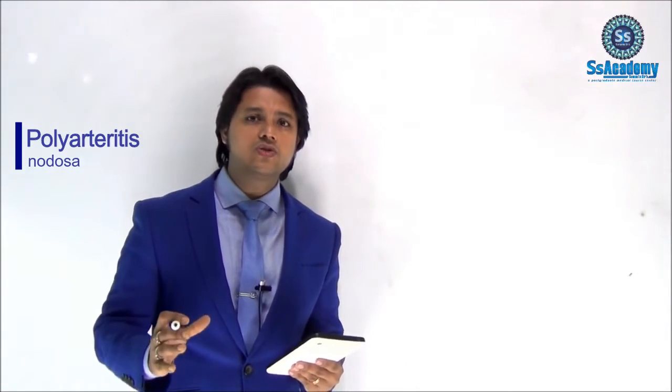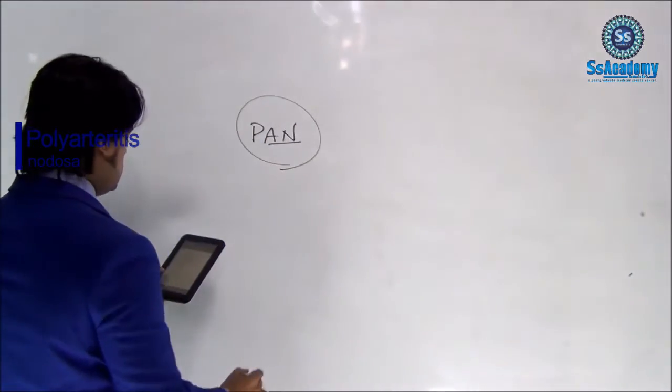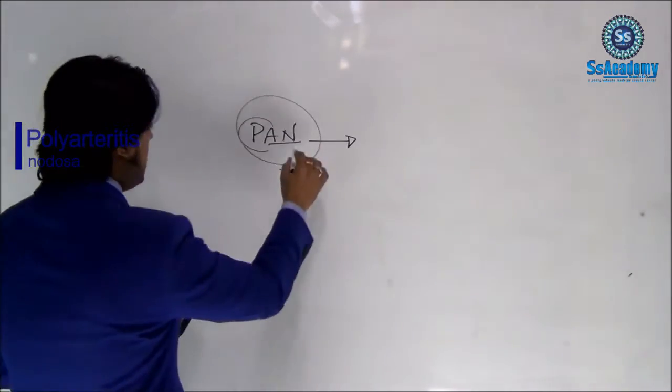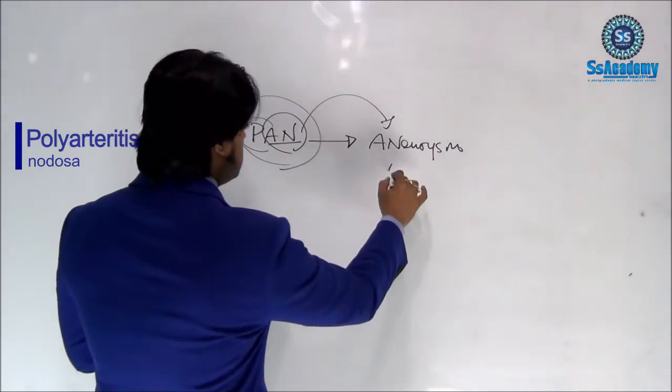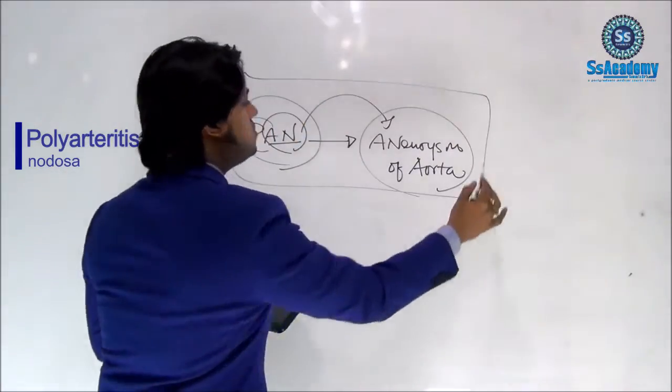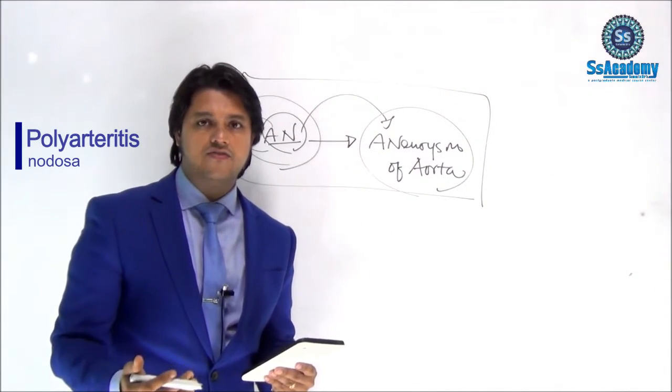It is really difficult to remember all the features of polyarteritis nodosa. The most important pathognomonic feature — the single word everyone must remember — comes from PAN itself: AN stands for aneurysm. So 'AN' from PAN = aneurysm of the aorta. This is the pathognomonic feature you must remember: PAN → AN → aneurysm.